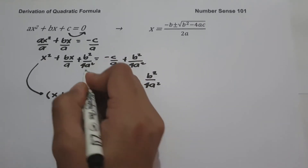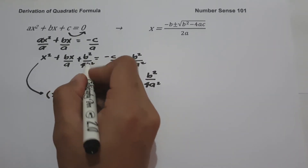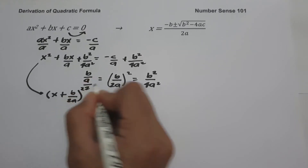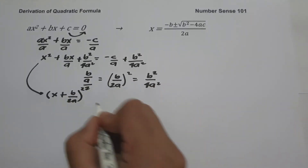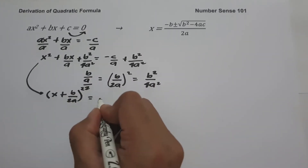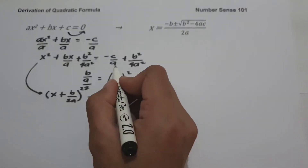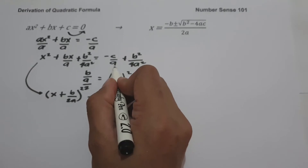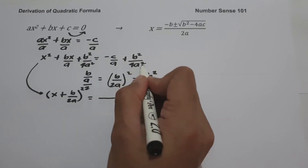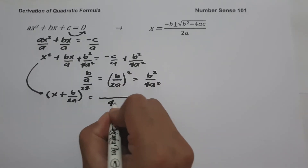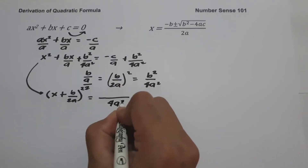The square root of 4a² is 2a. So the left side factors as (x + b/2a)². For the right side, the LCM of a and 4a² is 4a².